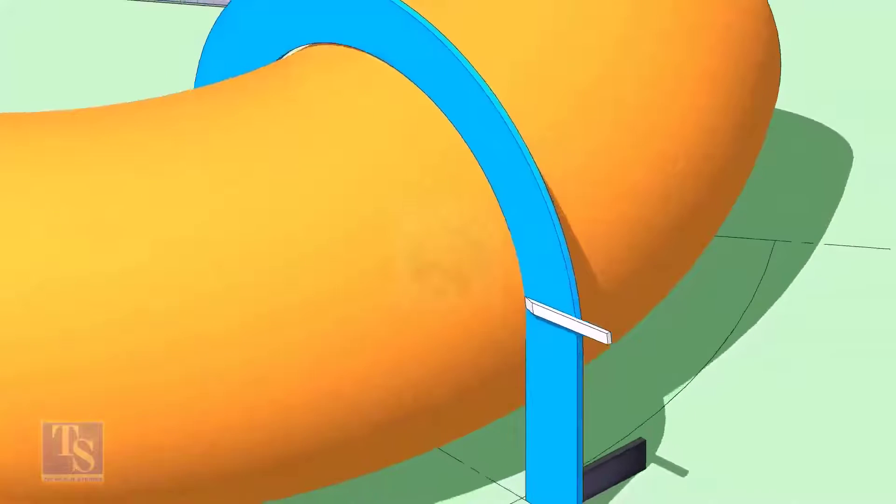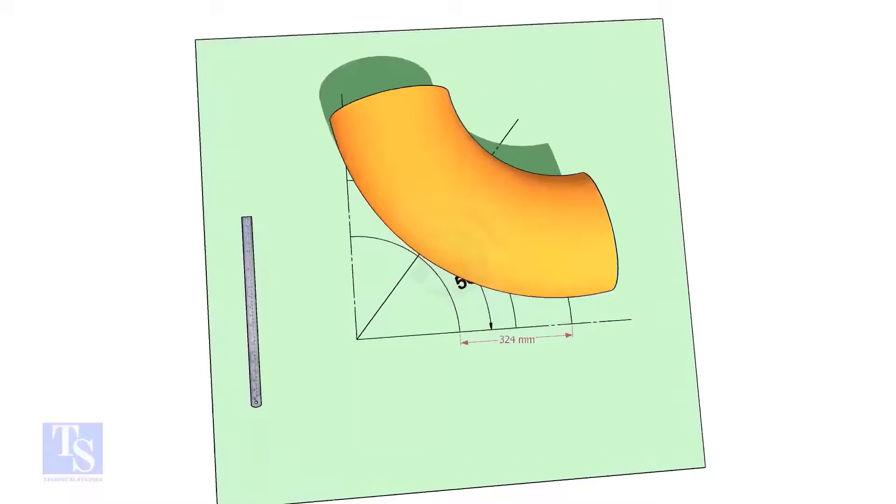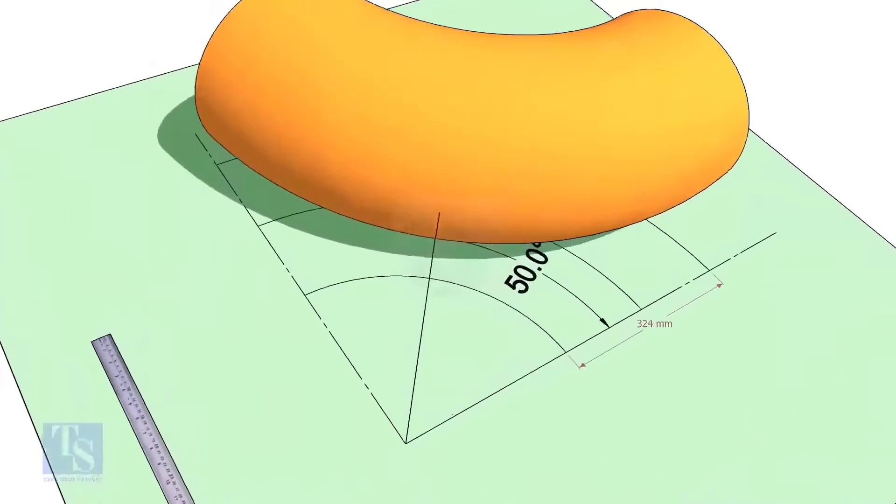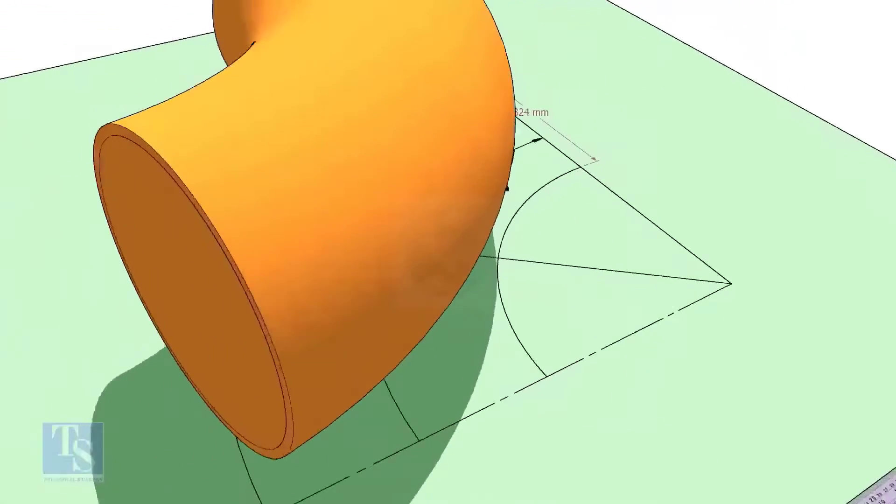Draw a half circle line on the elbow where the plate touches the pipe. Reverse the elbow position as shown. Match the line on the elbow and the 50-degree line.